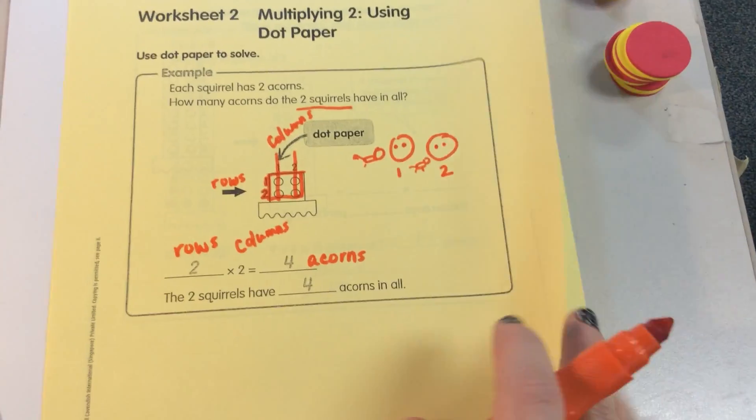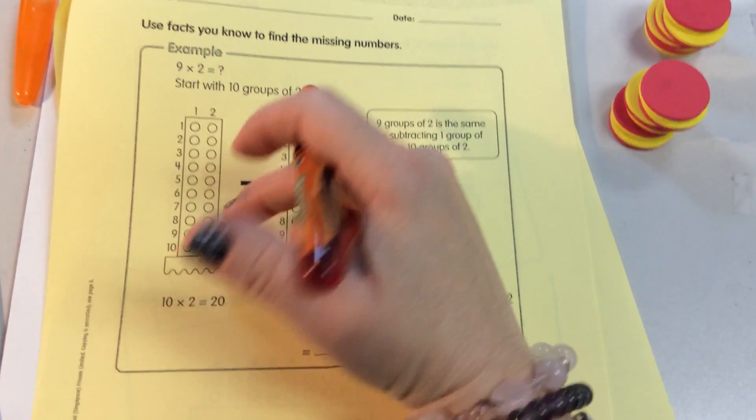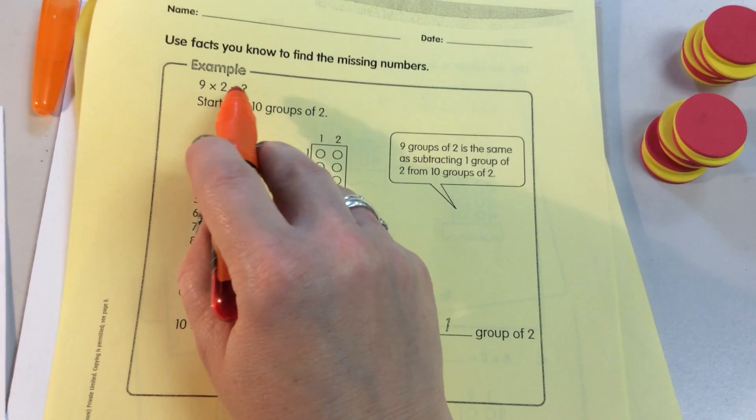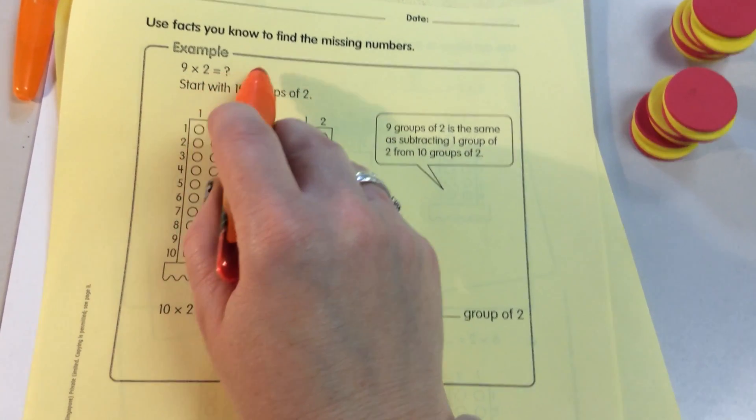Now we're going to go ahead and look at the homework and look further in. And see that they have the dot paper for us. Now it says 9 times 2 is equal to what? Or we could say 9 rows of 2 is equal to what?